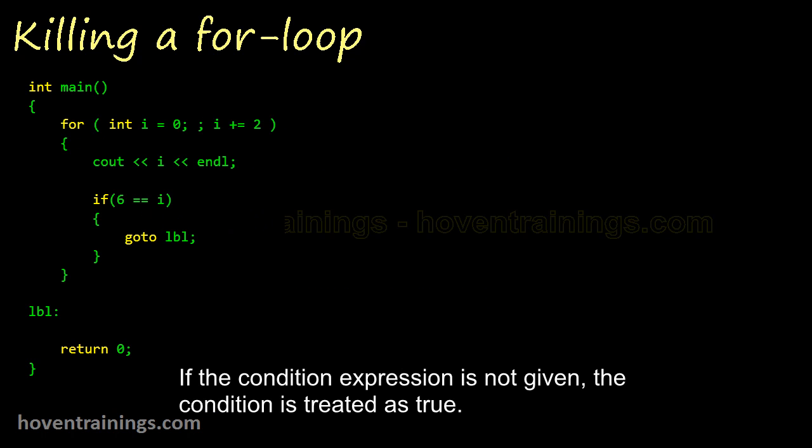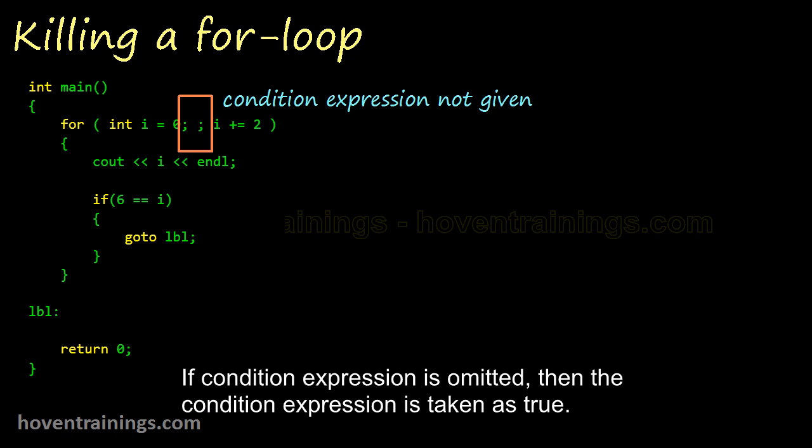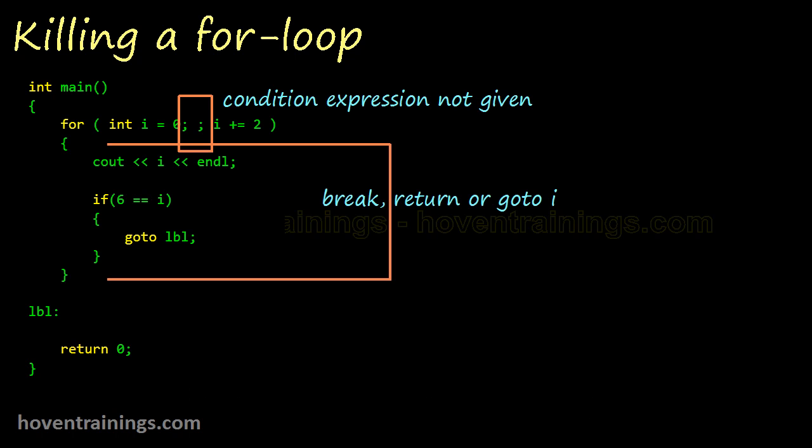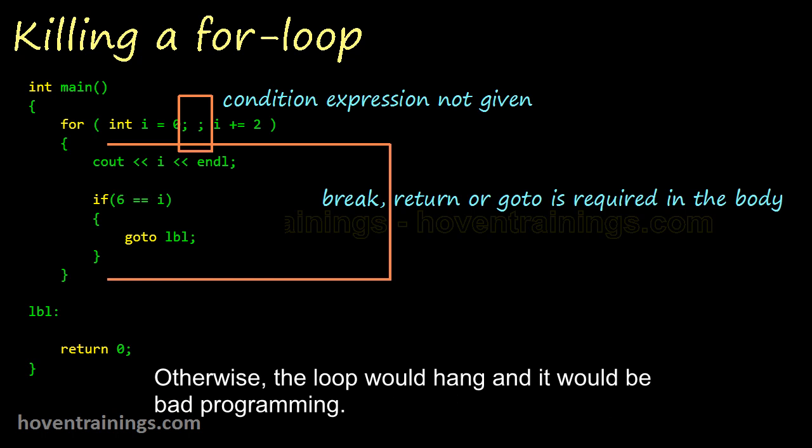If the condition expression is not given, the condition is treated as true. If condition expression is omitted, then the condition expression is taken as true. In that case a developer must use either of the three ways to ensure an exit from the loop. The body must use break, return or goto statement to terminate the loop. Otherwise, the loop would hang and it would be bad programming.